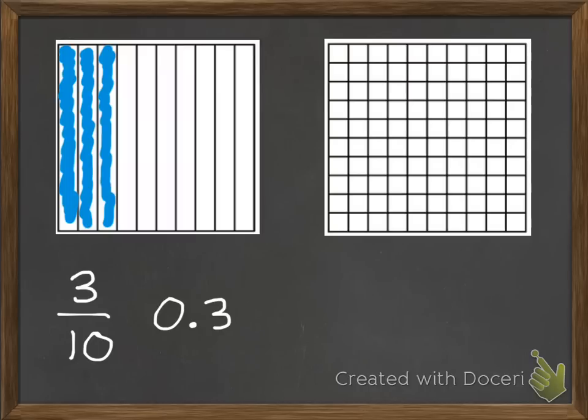If we break this whole into a hundred pieces and once again shade in three of our pieces. If this was a fraction, we'd write three one-hundredths, which is a very small part of that whole.